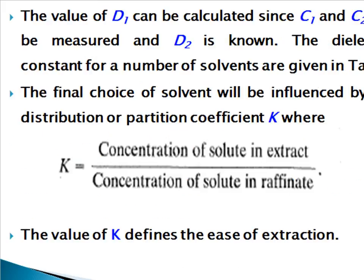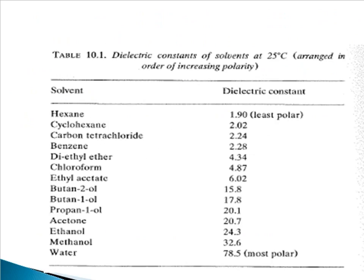The value of D₁ can be calculated since C₁ and C₂ can be measured and D₂ is known. The dielectric constants for a number of solvents are already known. The final choice of solvent will be influenced by the distribution or partition coefficient K, where K equals the concentration of solute in the extract divided by the concentration of solute in the raffinate. The value of K defines the ease of extraction.